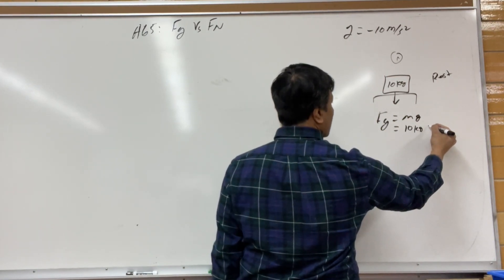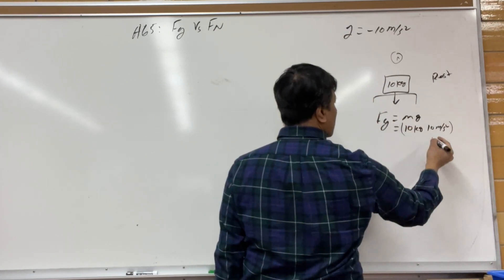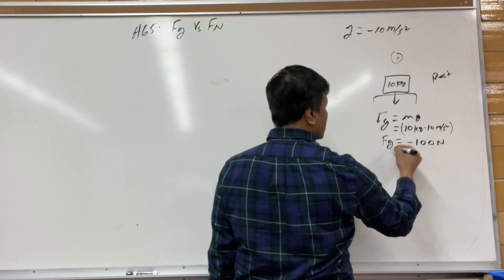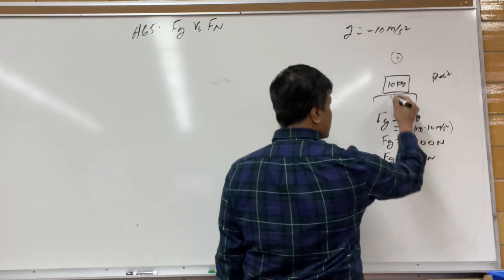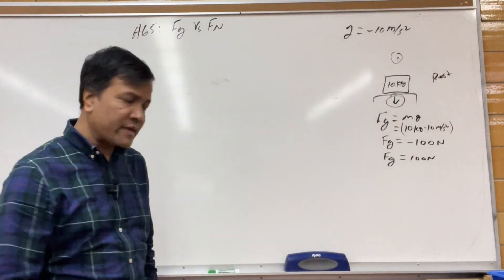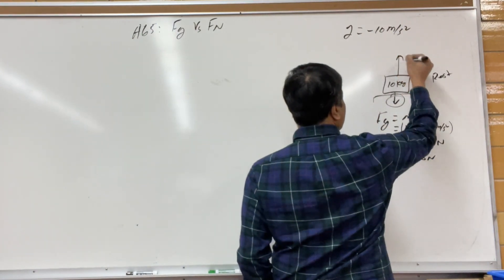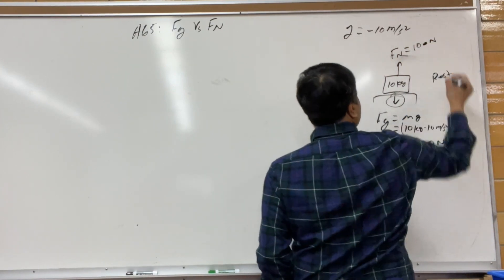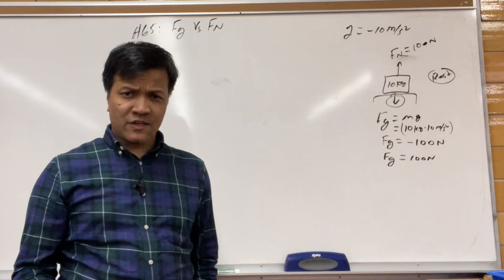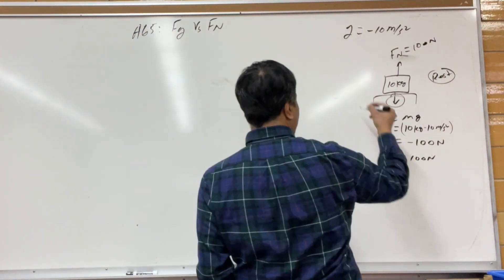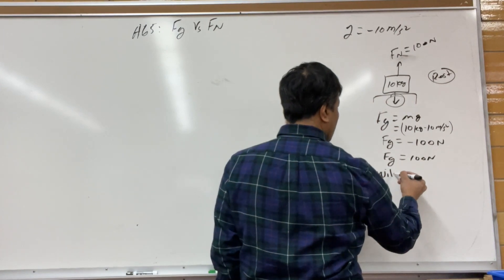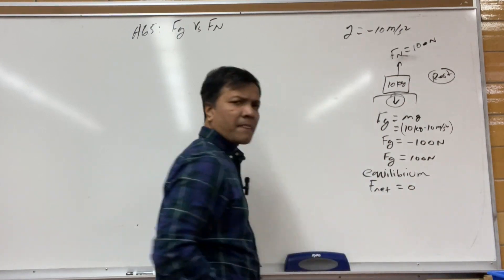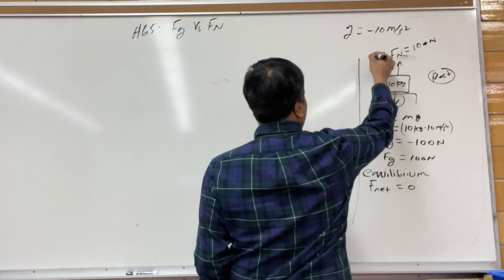So m is 10 kilograms and g is 10 meters per second squared, giving fg equal to negative 100 newtons, or just 100 newtons downward. Normal force fn is equal in magnitude but opposite in direction. We know this because the object is at rest, so all forces cancel each other — the body is in equilibrium because the net force is zero.